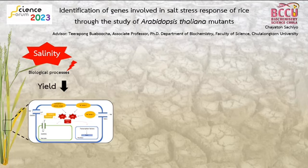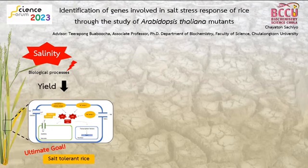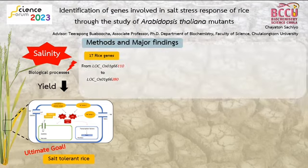These biomolecules come from genes, so if we can identify the genes, it could help us understand the underlying mechanisms and maybe create soil-terrain rice. My advisor, Ajantirapong and his team, have already found the region in rice genome where those genes could be. So my objective is to identify and validate genes in that region.